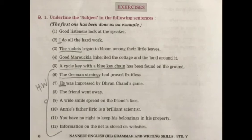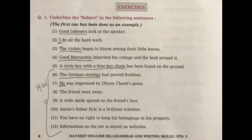'A cycle key with a blue key chain has been found on the ground.' The verb is 'found' — something has been found. Who found on the ground? A cycle key with a blue key chain. So 'a cycle key with a blue key chain' is your subject and 'has been found on the ground' is your predicate.